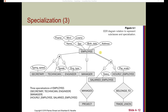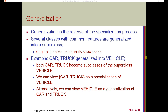The opposite of specialization is generalization — a process by which several classes with common features are generalized into a superclass. For example, we may have car or truck, and these can get generalized into the superclass of vehicle. So both car and truck become subclasses of vehicle. We can view car and truck as a specialization of vehicle, or alternatively, we can view vehicle as a generalization of car and truck.